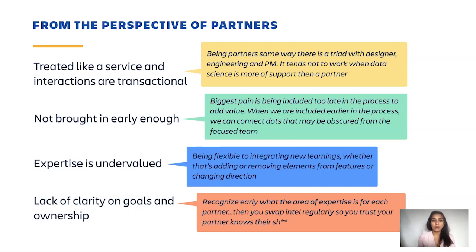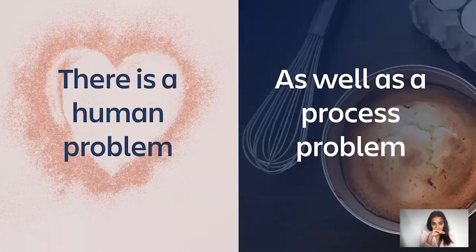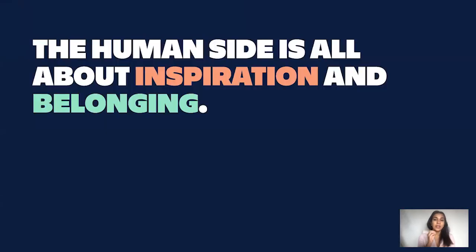When I think about these pain points on both sides, what's clear is that there's a human problem, but there's also a process problem. We need to solve both to make cross-functional collaboration work effectively. The human problem is all about having an inspiring vision to aim for, feeling like you're part of something bigger, and having a sense of belonging — feeling like you're part of a team, supported and cared for, and that people really care about what you bring to the table.